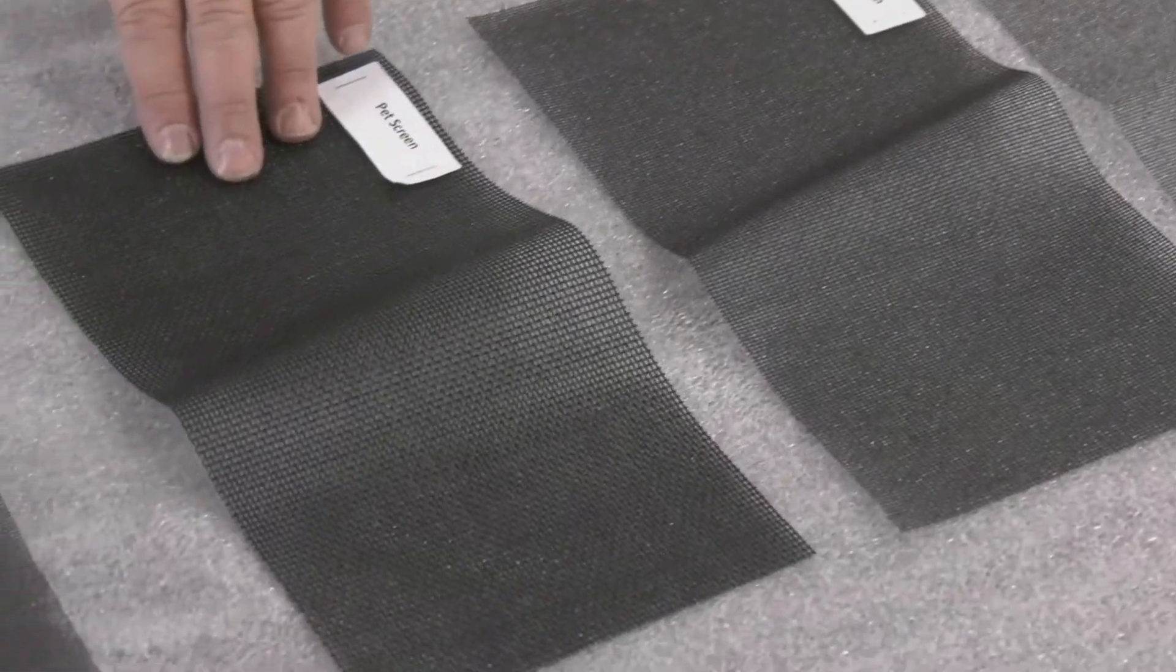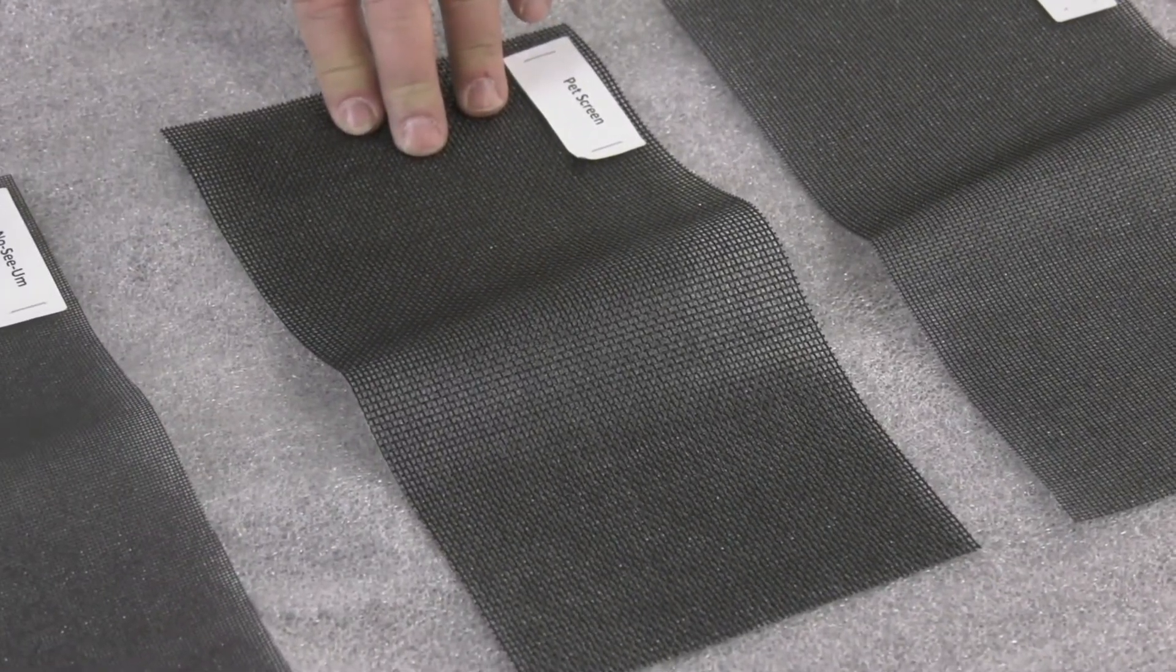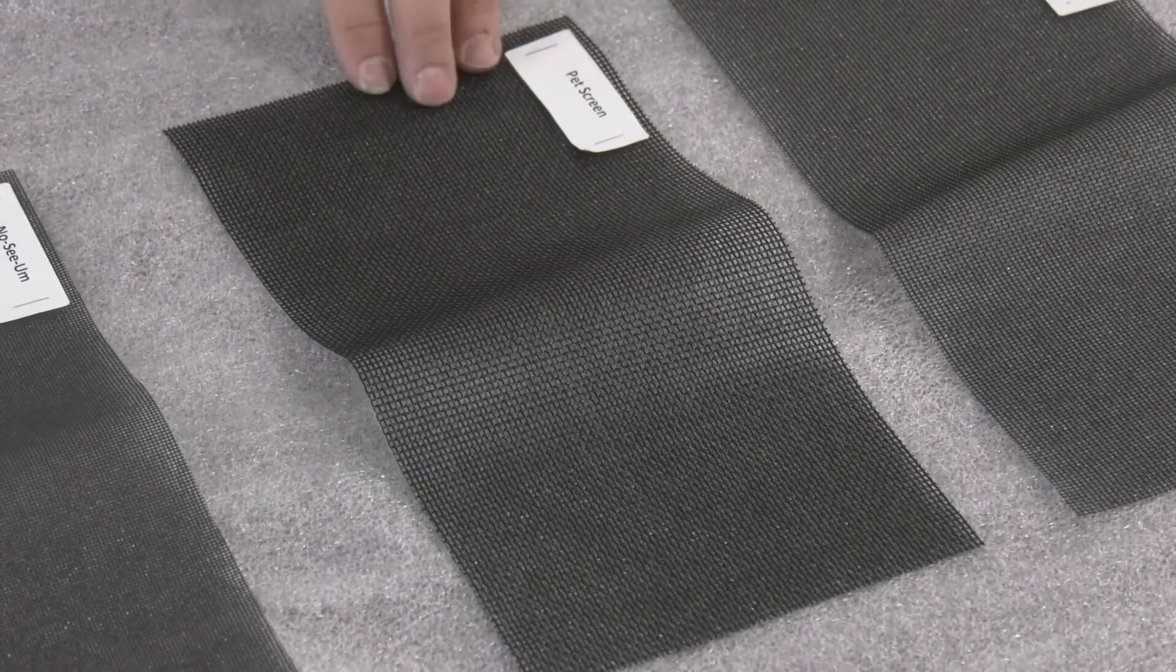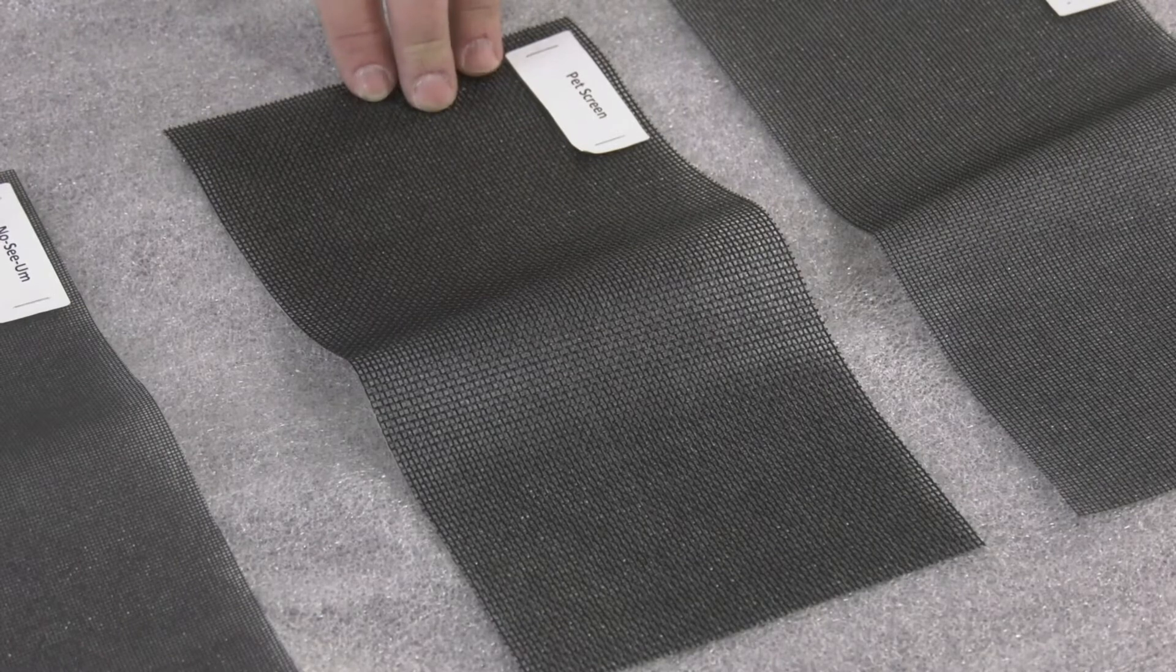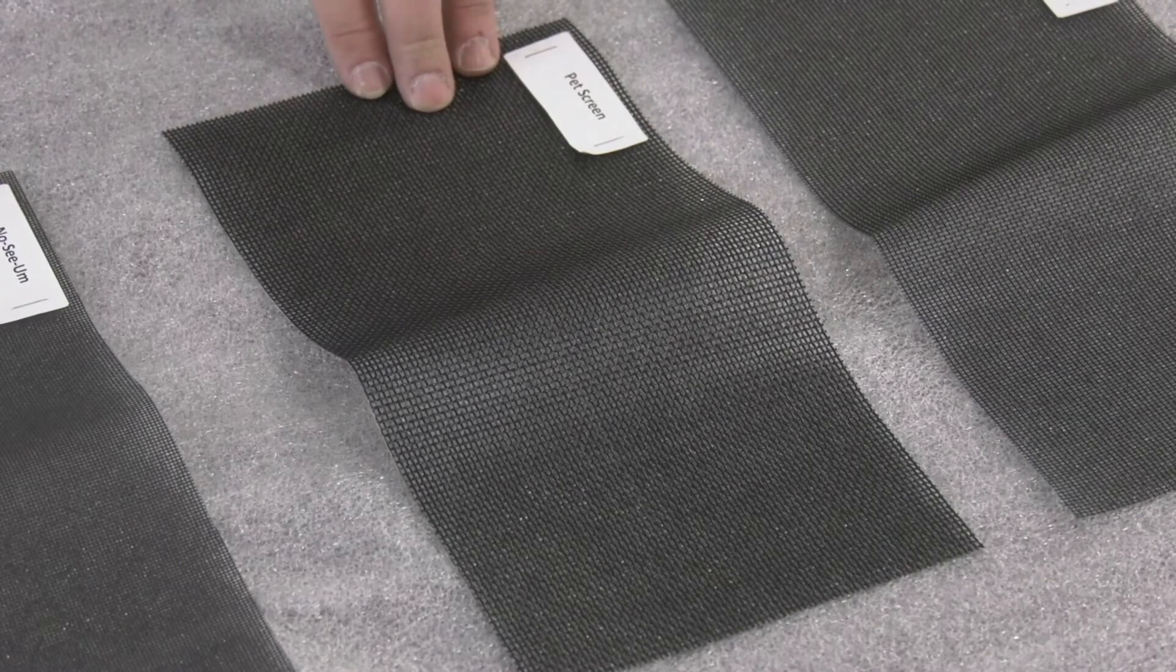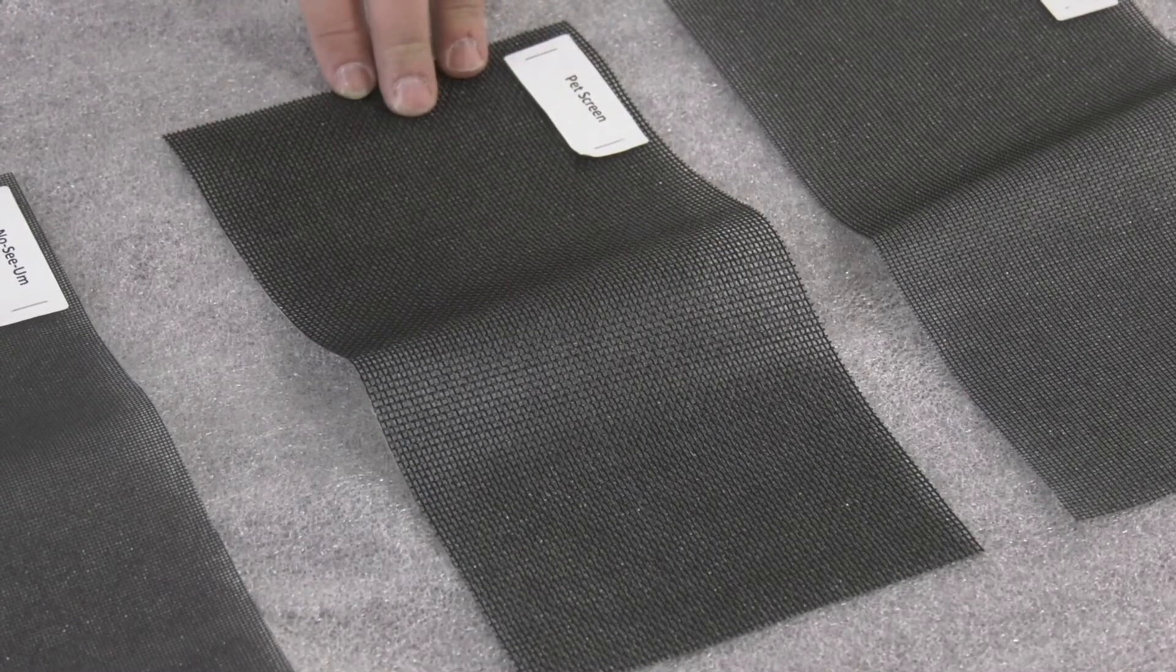Next is your PET screen. This is a vinyl coated polyester screen, and it's tear and puncture resistant. It's not harmful to pets. It's a 0.025 wire diameter, 15 by 10 mesh. It installs with a 0.285 spline, and it's available in 4 to 8 foot rolls.